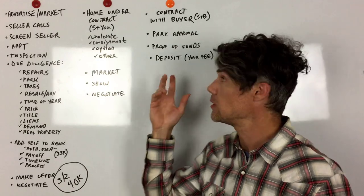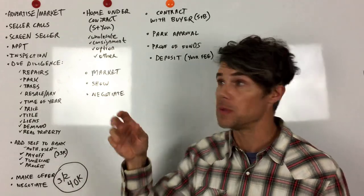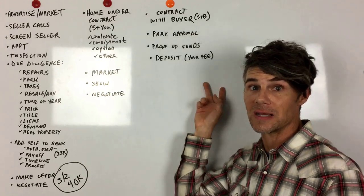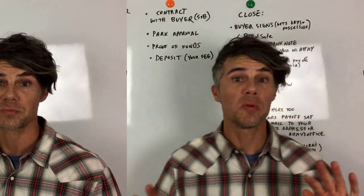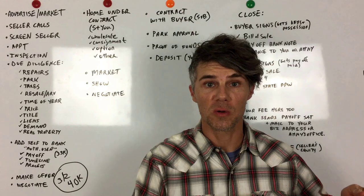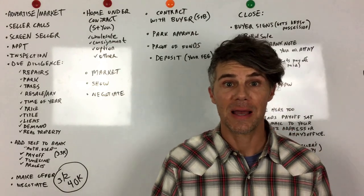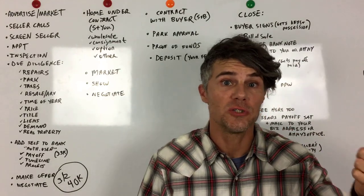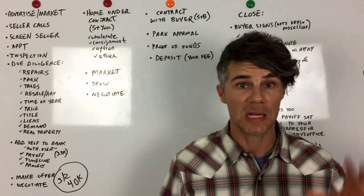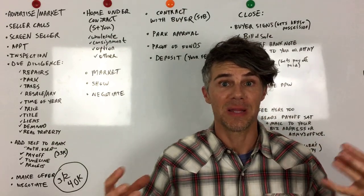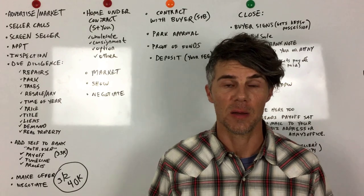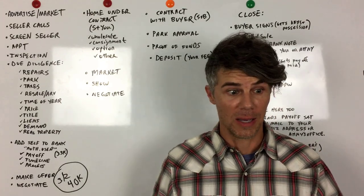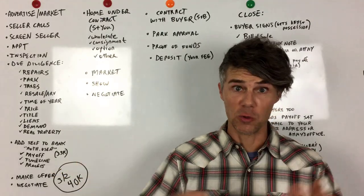Make sure the buyer has the ability to close — they have proof of funds, they're approved at the park, and they've put down your deposit. The park approval process might take a couple of hours or a couple of days. If it's not in a park and the home has to be moved, you don't even need that approval process. Make sure the buyer has lined up a mover and a location where the home is going. If the mobile home is in a park, that doesn't have to happen and you can close pretty quickly.